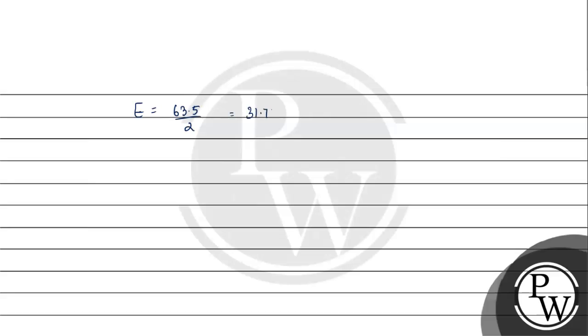So we have W will come 31.75 by 96500 into 1 ampere into 965. Now we have the W value 0.3175 gram.